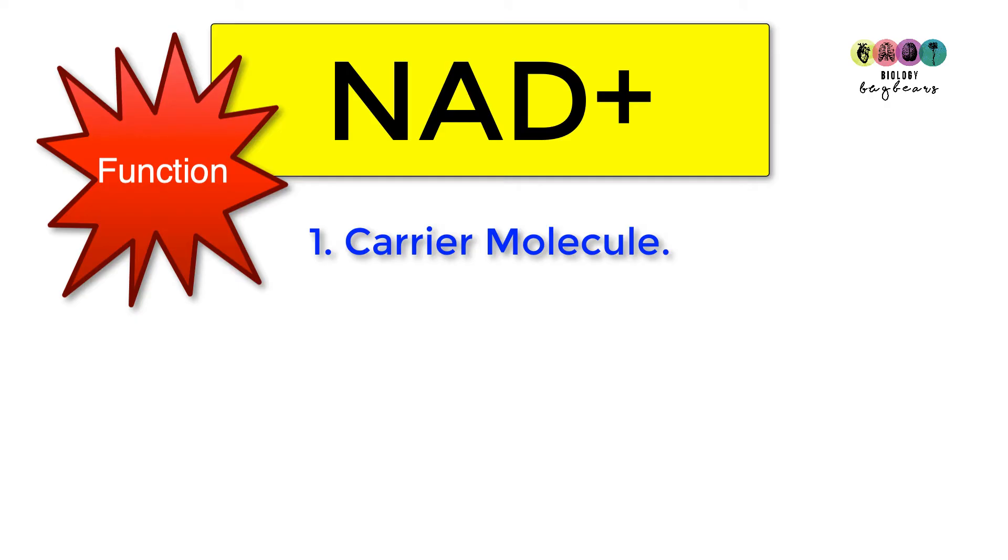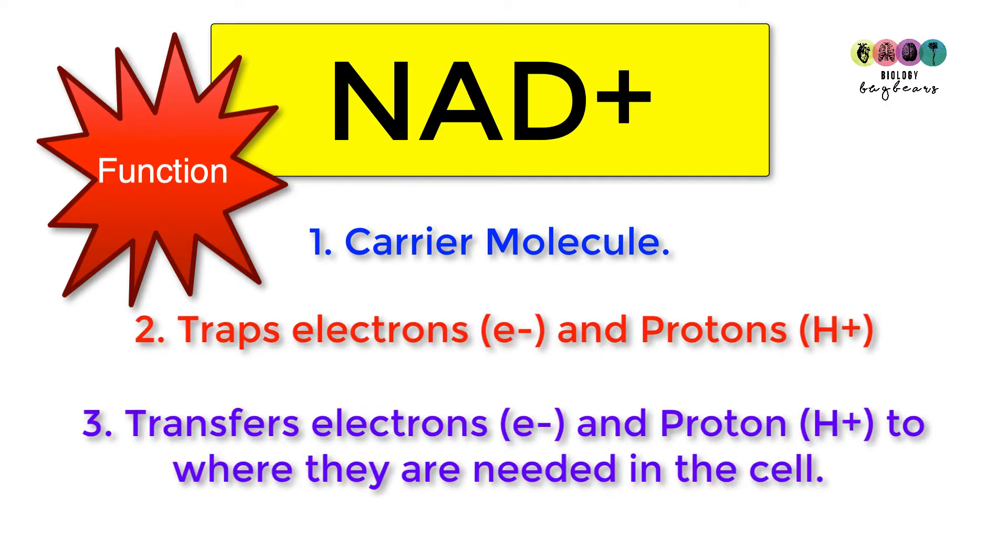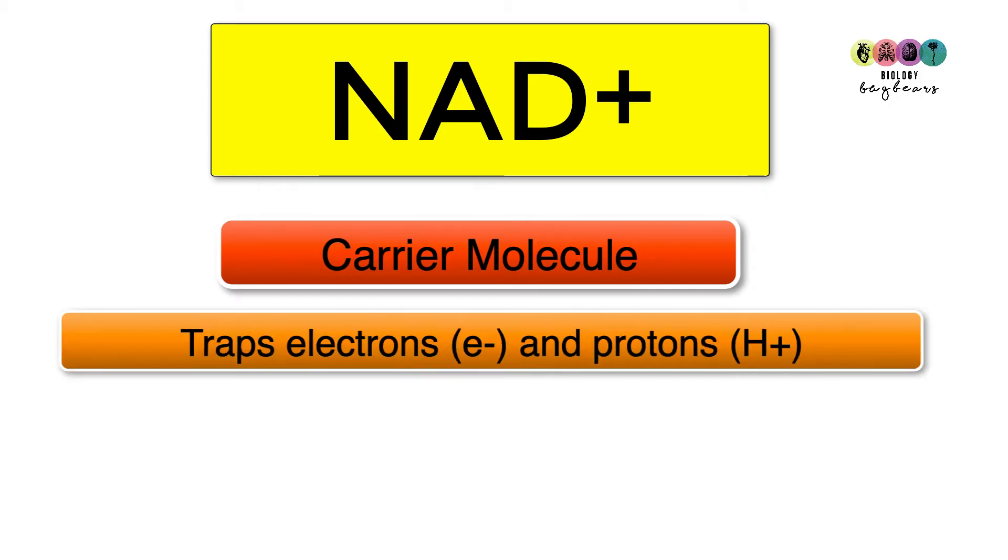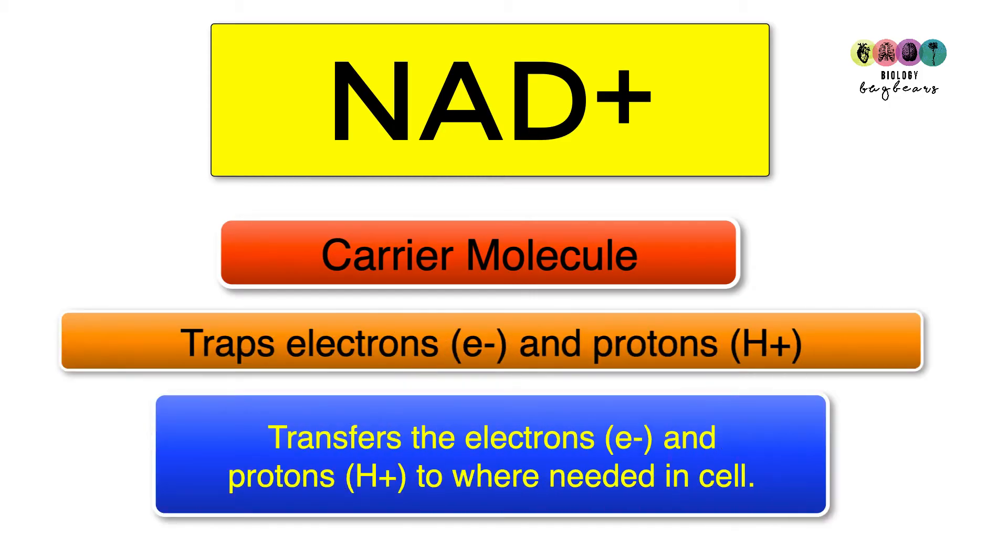NAD+ is a carrier molecule. It traps electrons and protons and transfers them to where they're needed in the cell. And that's the best way of describing it. State that it's a carrier molecule, that it traps electrons and protons, and finally, that it transfers those electrons and protons to where they're needed in the cell.